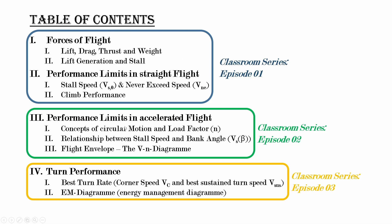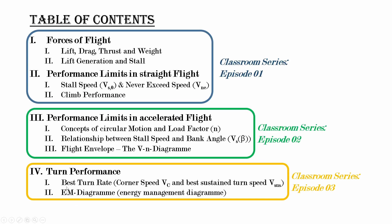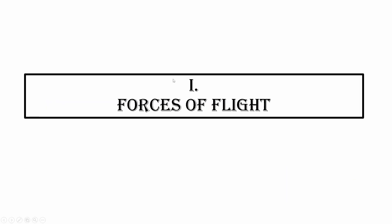In episode two, we are going to look at accelerated flight and specifically turn flight. The turn is a circular motion; circular motion is accelerated, hence accelerated flight. From these fundamental physical concepts we go all the way to building our flight envelope. Last but not least, in chapter four we are going to look in more detail at turn performance, specifically best turn rate, concepts of corner speed, best sustained turn speed, and EM diagrams.